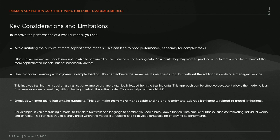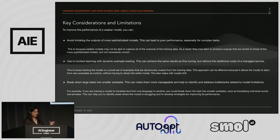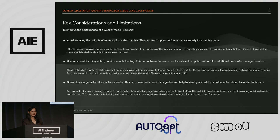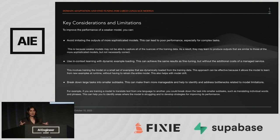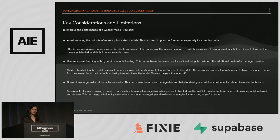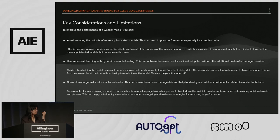The second tip is using in-context learning with dynamic examples. One big problem we see is data drift in models. Using in-context learning with dynamic example loading allows you to deal with that problem while also enabling cost management. The third thing is breaking down tasks into smaller tasks — instead of trying to train the model for an entire language or domain, can you break it down into very specific subtasks?